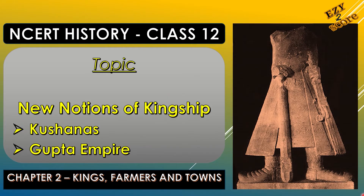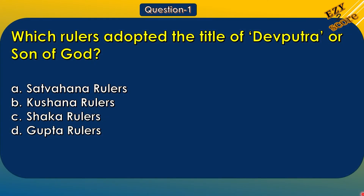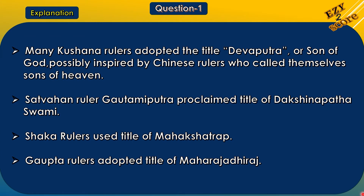Now let's start with MCQs of today's topic, based on the Kushana and Gupta Empire. Question 1: Which ruler adopted the title of Devaputra, or Son of God? Options: A. Satvahan rulers, B. Kushan rulers, C. Shakas rulers, D. Gupta rulers. The correct answer is option B, Kushana rulers. Many Kushana rulers adopted the title Devaputra, possibly inspired by Chinese rulers who called themselves Son of Heaven. The Satvahan ruler Gautamiputra proclaimed the title of Dakshinapath Swami, Shaka rulers used the title of Mahachatrap, and Gupta rulers adopted the title of Maharaja Dhiraj.